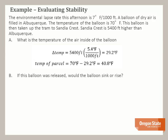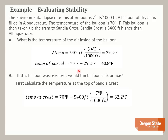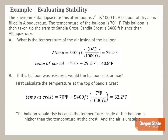If this balloon was released, would it sink or rise? To answer this, we need to know the temperature of the atmosphere at Sandia Crest. Using the environmental lapse rate of 7°F per thousand feet, the temperature at the top equals 70 minus 37.8, which is 32.2 degrees Fahrenheit. So if we release this balloon of warmer air at the top of Sandia Crest, it would be warmer and less dense than the surrounding air. Therefore, the balloon would rise, and the air is unstable.